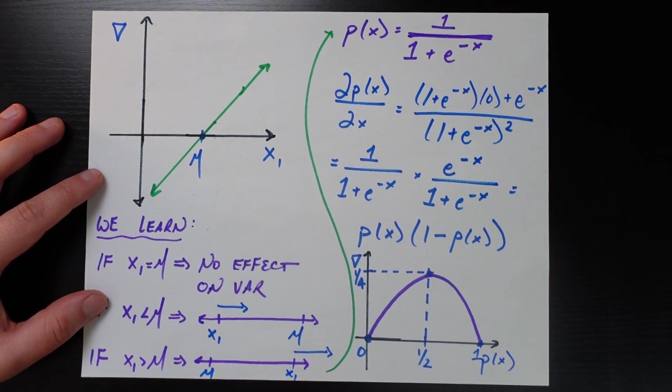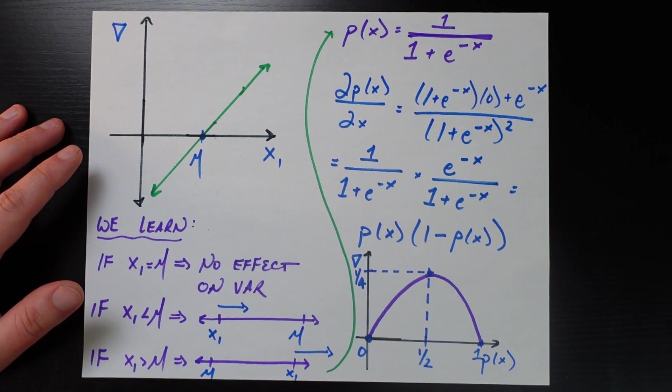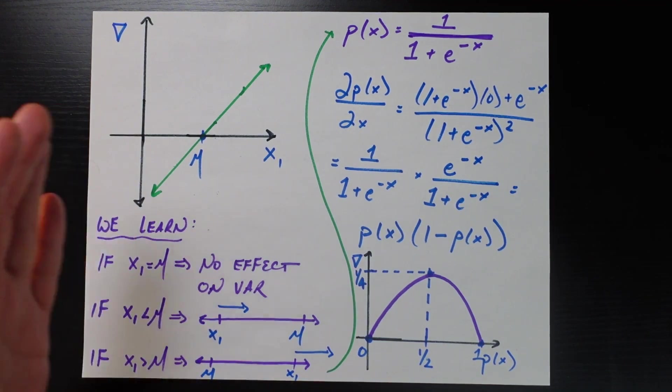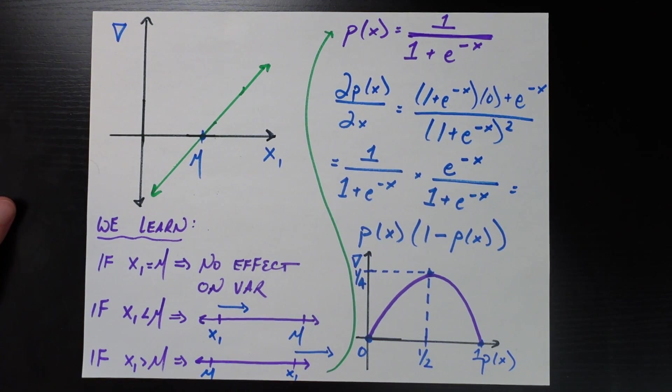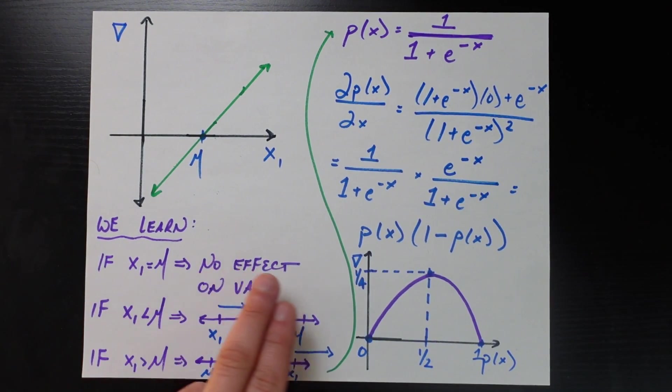So the gradient, I use this upside down triangle for the gradient in case you're unfamiliar with that notation, but the gradient is going to be exactly 0. There's no change if one of these numbers is exactly equal to the mean of all of the numbers. And that intuitively makes sense, because the variance is measuring the average deviation from the mean. So if you have one of your arguments exactly equal to the mean, then it's not really contributing to that deviation at all, because it's exactly where the mean is.